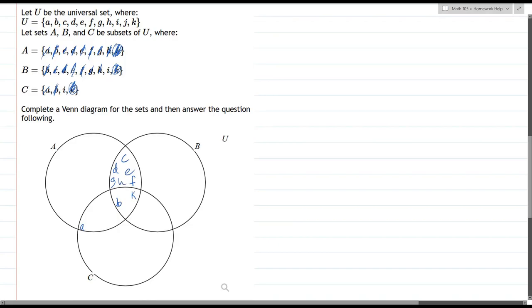Last up, the letter I is in B and C. Letter I is in there. Okay, so that is everything in these sets.